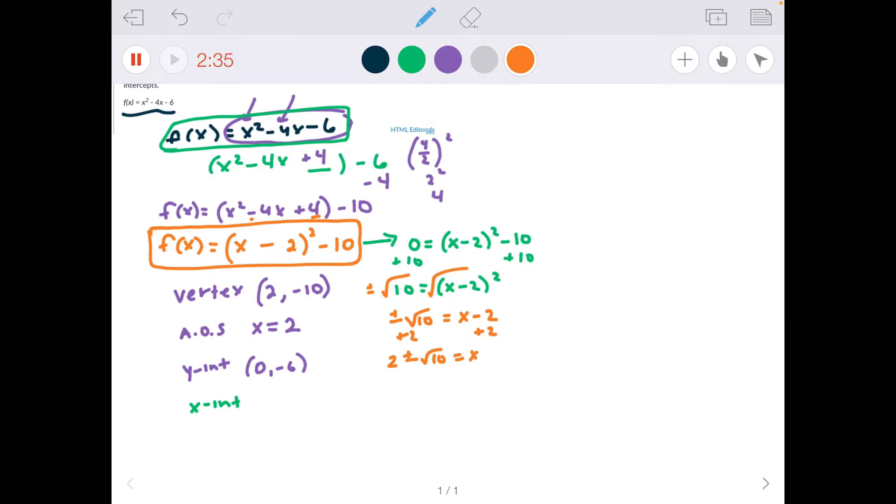So I have 2 x-intercepts. (2 - √10, 0) and (2 + √10, 0). Keep in mind that these are exact, so you want to keep them exactly that way. And that the intercepts are coordinate points.